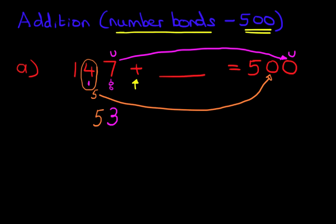If we add 5, 5 plus 5 is 10, so this becomes 0, but we have to carry 1 across to the hundreds.